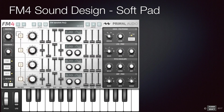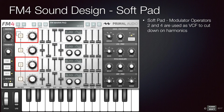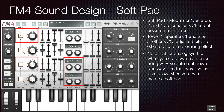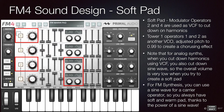Let's summarize what we've done so far. We used the modulator operators 2 and 4 like a VCF to cut down on harmonics. Operator 1 pitch is adjusted slightly to give the detune so that you get a chorus effect. One of the advantages with FM synths over analog synths is that for analog synths, when you cut down to a sine wave, the overall volume is very low when you try to create a soft pad. For FM synths, you can use a sine wave for the carrier operator, so you always have a soft and warm pad, thanks to the power of the sine wave.